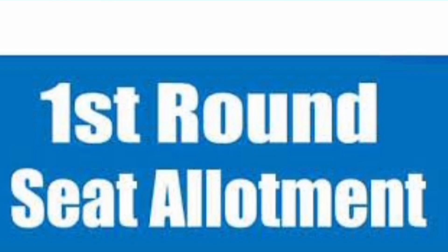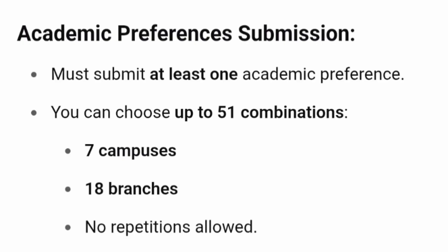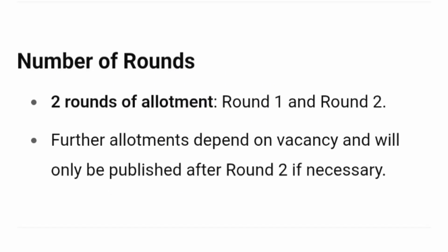Now let's understand how seat allotment works in the first round. For academic preference submission, you can choose up to 51 combinations — that is the maximum limit. If there are 7 campuses and 18 branches available, you can put up to 51 combinations. There are basically 2 rounds — round 1 and round 2 — and only if some seats are left will there be a mop-up round. The mop-up round schedule is given, but it only happens if seats remain after round 2.